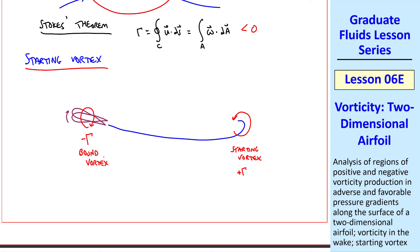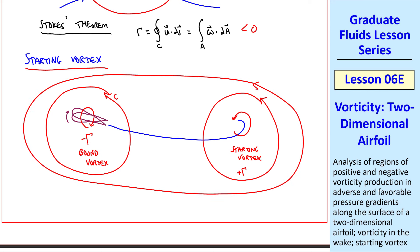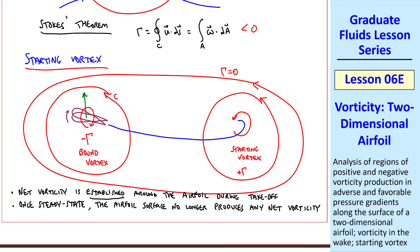The bound vortex around the airfoil and the starting vortex at the airport have the same magnitude of circulation, but opposite signs. If we take a big contour around the whole thing, there's no net circulation. We conclude that net vorticity is established around the airfoil during takeoff. Once we've reached steady state around the airfoil, however, the airfoil surface no longer produces any net vorticity. This bound vortex, by the way, is what leads to lift on the airfoil, which we'll talk about in more detail in a later lesson.